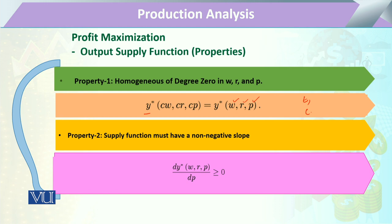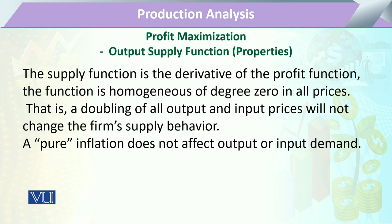If the incremental change in prices is different, we can expect something different. The second property is that the supply function must have a non-negative slope — meaning there will be at least a positive change in output with reference to output price. The supply function is always the derivative of the profit function, and this function is already homogeneous of degree 0, meaning if we double all output and input prices there will be no change in the firm's supply behaviour.